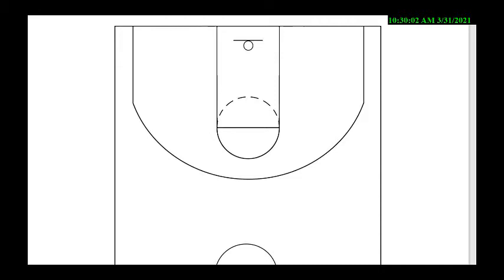All right, guys, this is our pick and roll defense. Everybody runs screen and roll, so we have different ways of defending the pick and roll. There are seven ways to do it — switching it, going under it, going over it, show and recover, soft hedge, hard hedge, ice, double.